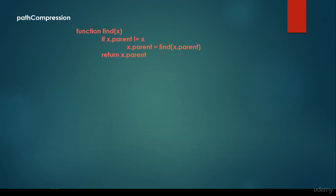What about path compression? This is basically the modified find method. We are looking for x, and if x.parent is not equal to x — which means this is not the root node, not the representative — we are going to set the parent to be find(x.parent), and this is the recursive method call. So we are going to recursively set the parent to be the representative. We set every vertex's parent to be the representative, until we reach the representative itself, and then we return x.parent.